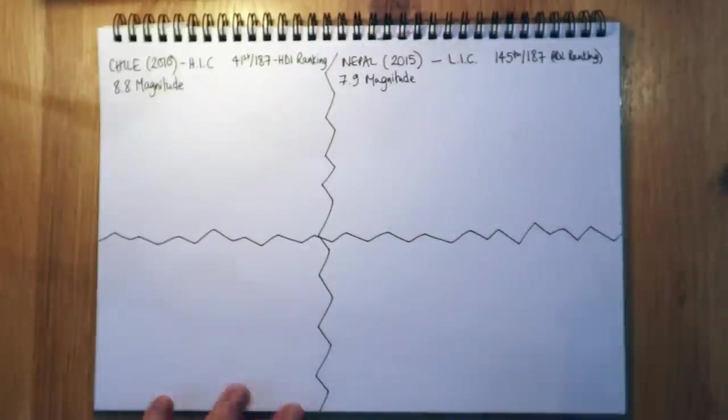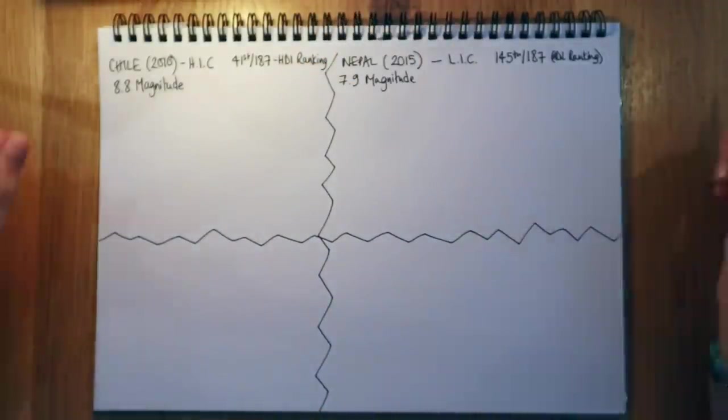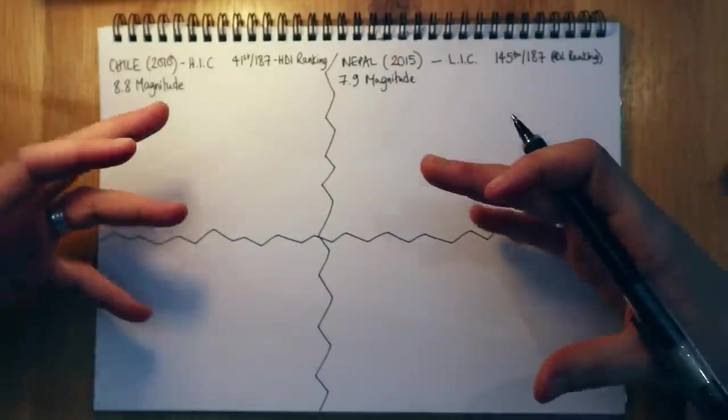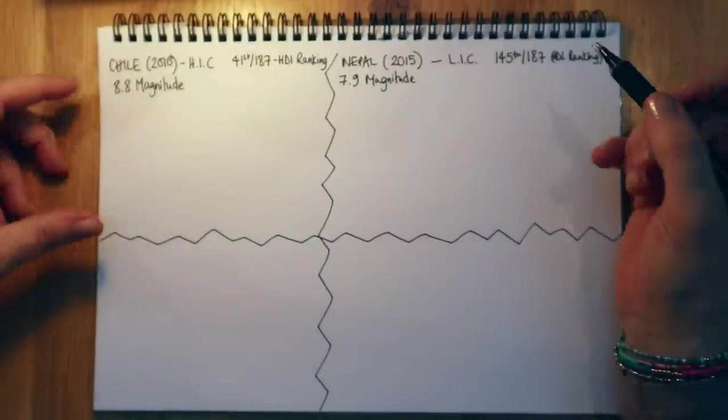is ranked 41st out of 187 countries for its Human Development Index. So Chile is a far more developed country. Now both earthquakes, as we said, caused quite substantial devastation.